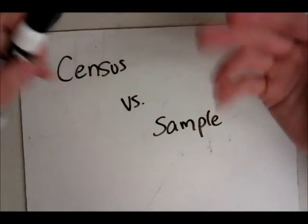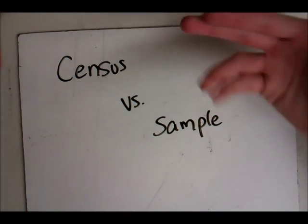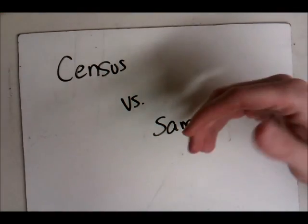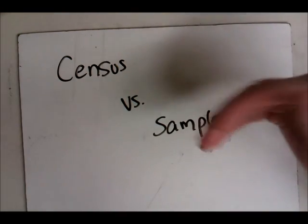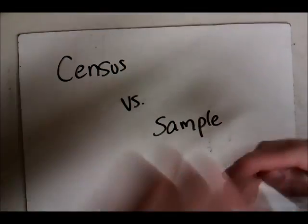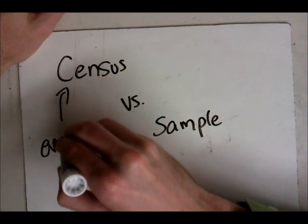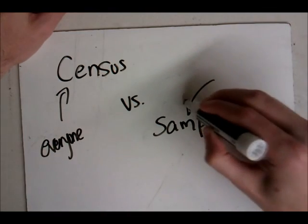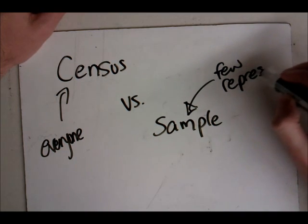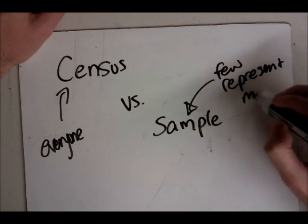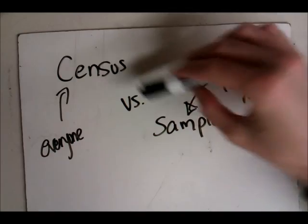Or sometimes if you don't have the money, because a census can be very expensive, or the time, because it does take a lot of time to ask everybody, you may only take a sample. So I may only ask one class for their heights and have that represent the entire population. A census is everyone in your population. A sample is when a few people represent many or all of them.